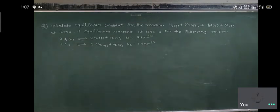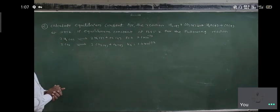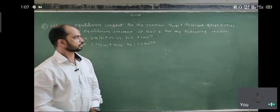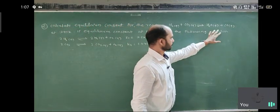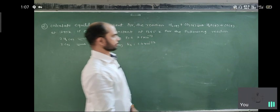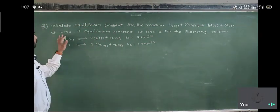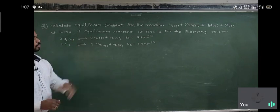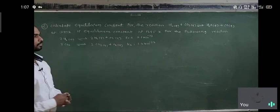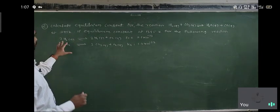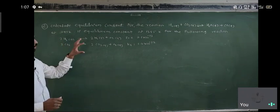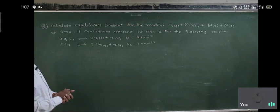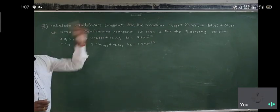Now for the third problem: calculate the equilibrium constant for the reaction H₂ plus CO₂ gives H₂O plus CO at 1395 Kelvin, given the equilibrium constants at 1395 Kelvin for two other reactions.